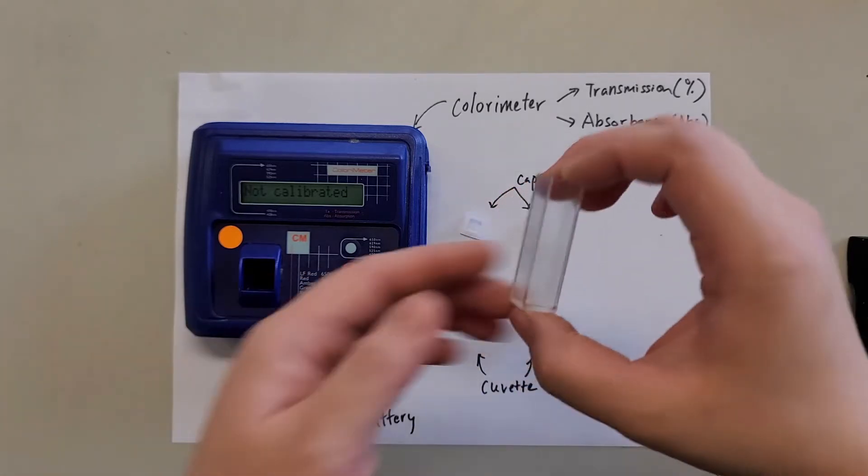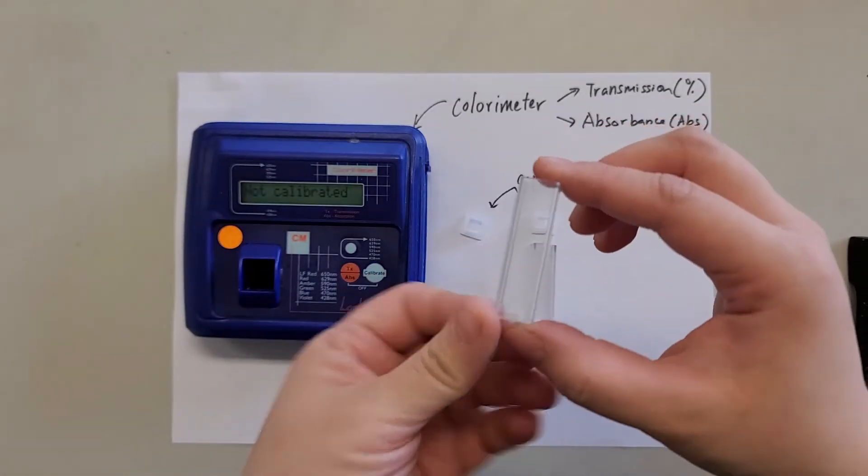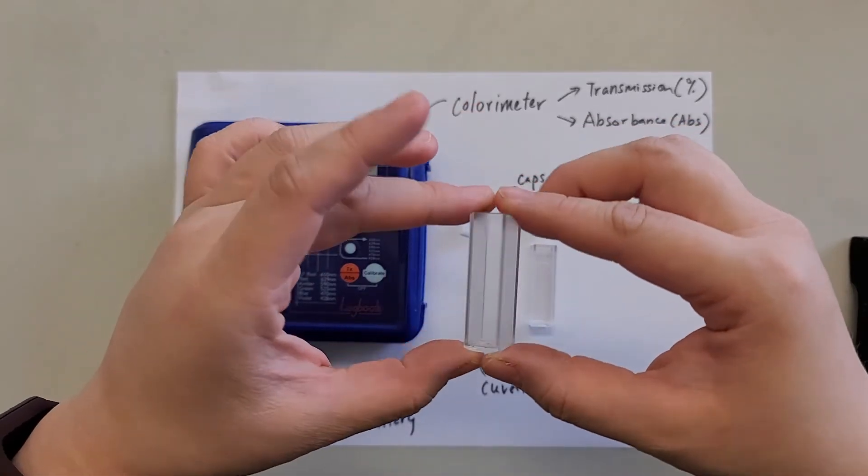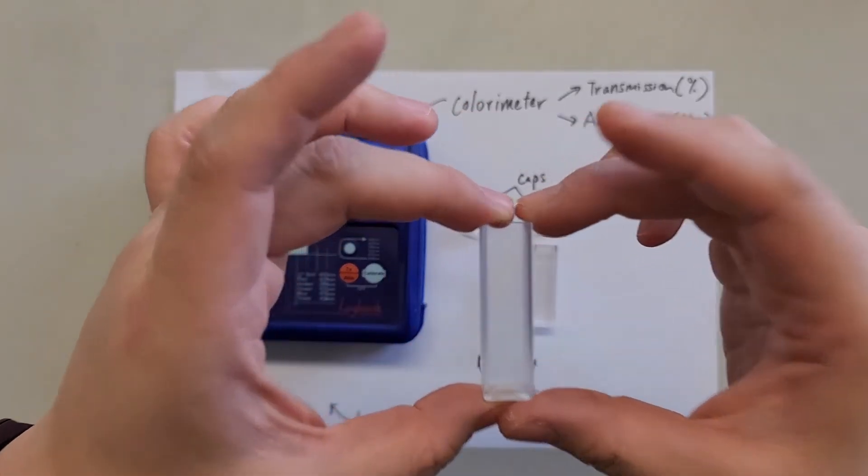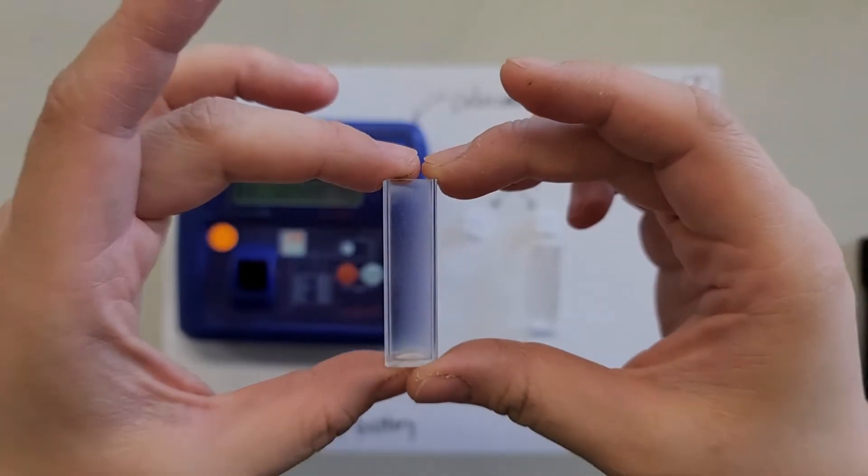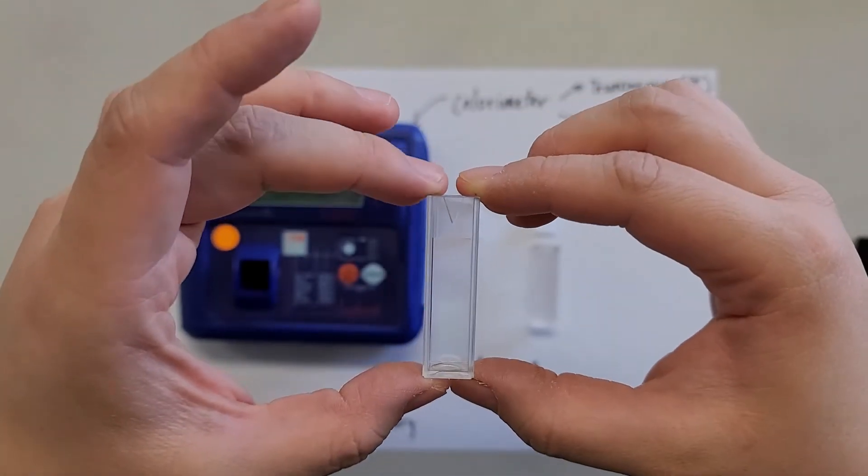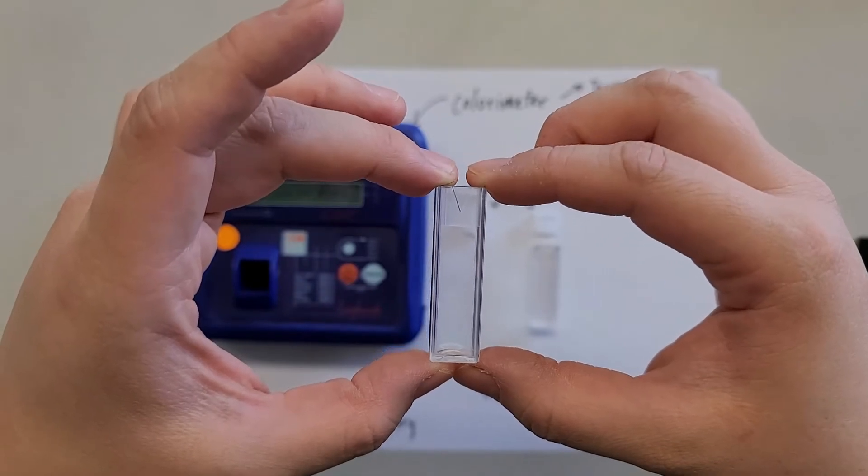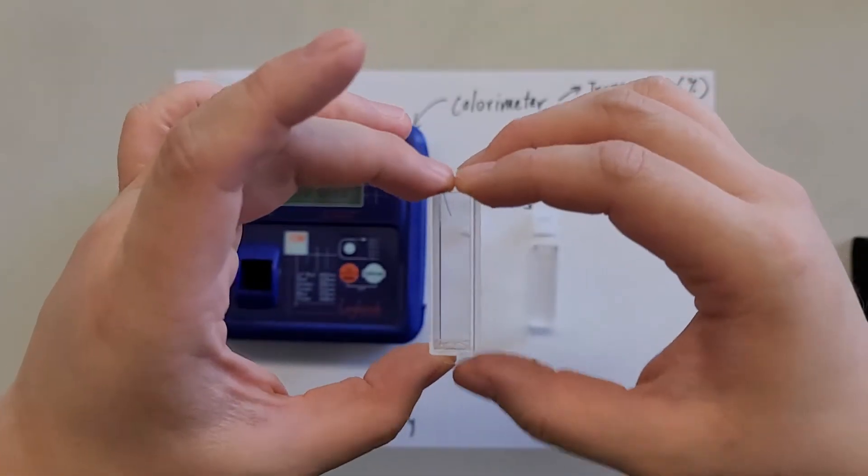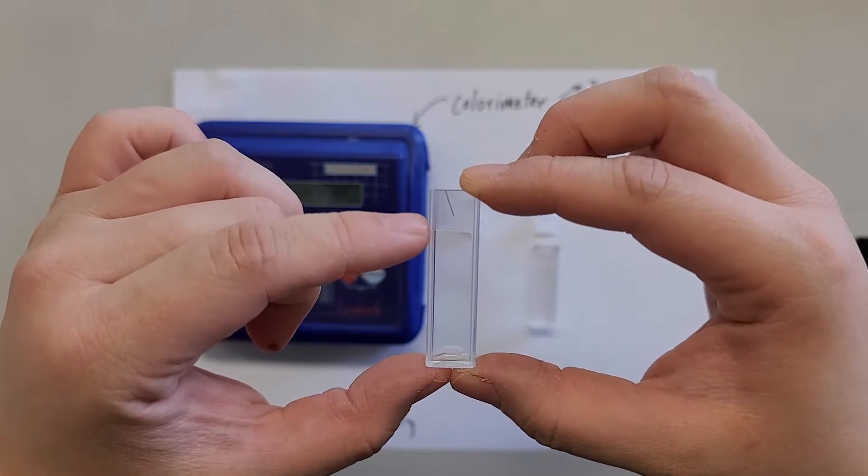So here is the cuvette. You will see that there will be two clear sides and two cloudy sides. Bring it a bit closer. Now this is the cloudy side. This side is the clear side. Generally speaking, the cuvette can hold about three mils of solution. Fill it up until to the line here.